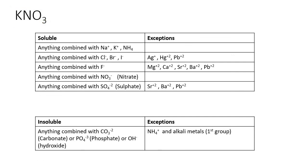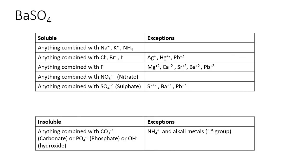For KNO3: anything combined with Na, K, or NH4 is soluble with no exceptions, and even if you check the NO3 rule, anything combined with NO3 is also soluble. So KNO3 is soluble. For BaSO4: anything combined with SO4 is soluble, except for Sr, Ba, or Pb. We have Ba, so BaSO4 is insoluble — it cannot dissolve.